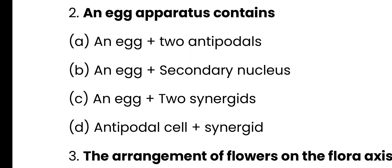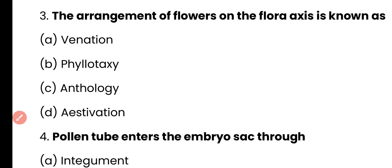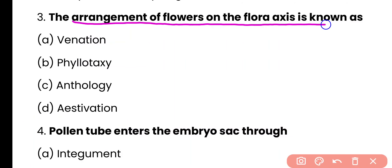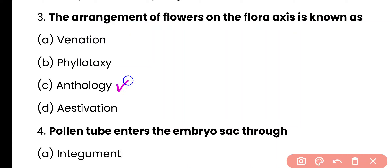Question number 3. The arrangement of flowers on the floral axis is known as: phyllotaxy, anthology, or estivation? The correct answer is option C. The arrangement of flowers on the floral axis is called anthology.